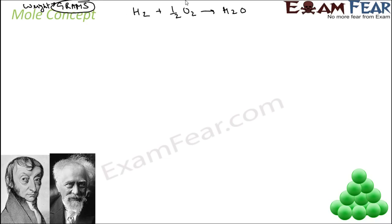If you remember the concept, this equation signifies that one molecule of hydrogen is reacting with half a molecule of oxygen. Let's balance it. Two molecules of hydrogen react with one molecule of oxygen to form two molecules of water. So the concept was that two molecules of hydrogen will react with one molecule of oxygen to give two molecules of water. But actually you can't weigh one molecule because the weight of one molecule is very, very small.